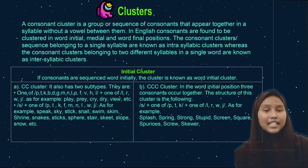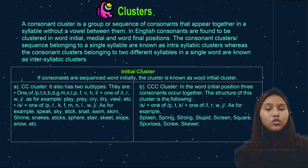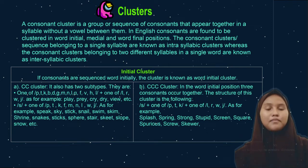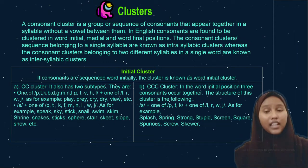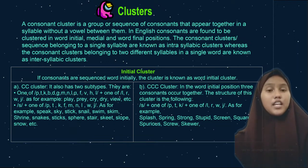Consonant cluster sequences belonging to a single syllable are known as intrasyllabic clusters. The maximum possibility of a consonant cluster is three consonants at the beginning and four in the final position. The first type is initial clusters — consonants that occur in sequence initially, and the cluster belongs to a single syllable.